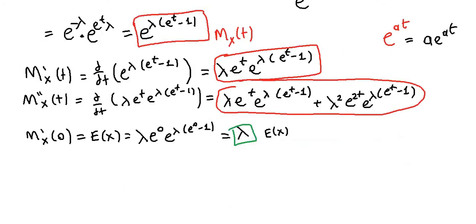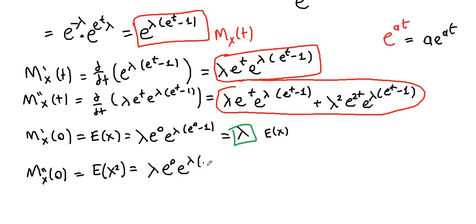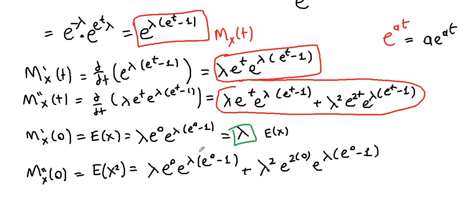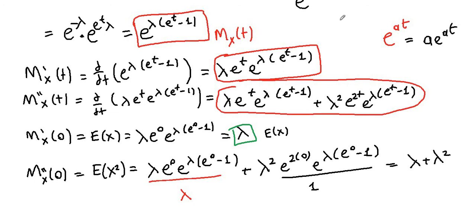Let's find the expectation of X squared. Plugging in t equals 0 into the second derivative of the moment generating function gives us the second moment, E[X²]. The first term reduces to lambda, as we already obtained. The second term: e to the 0 times e to the 0 equals 1, so we get lambda squared. Therefore E[X²] equals lambda plus lambda squared.